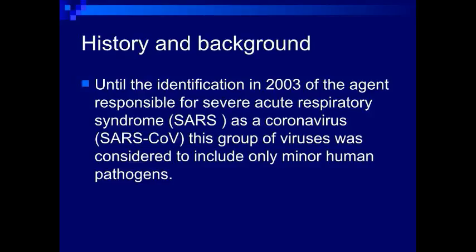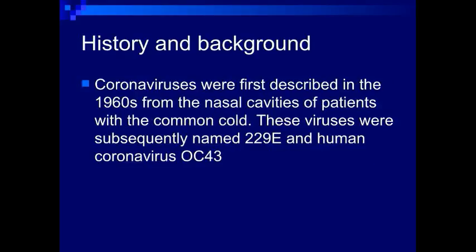History and background. Until the identification in 2003 of the agent responsible for severe acute respiratory syndrome as a coronavirus, SARS-CoV, this group of viruses was considered to include only minor human pathogens. Coronaviruses were first described in the 1960s from nasal cavities of patients with the common cold. These viruses were subsequently named 229E and human coronavirus OC43.